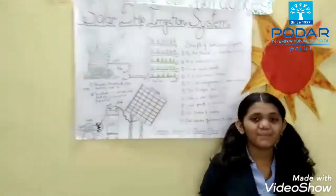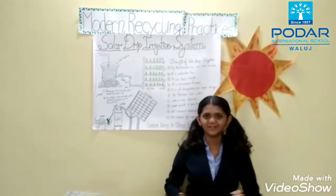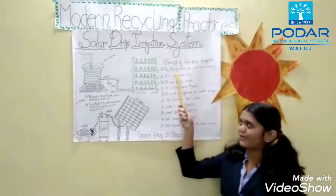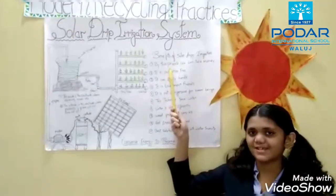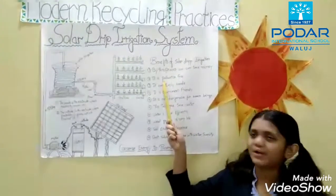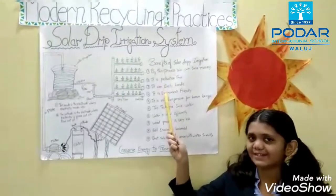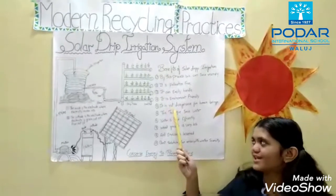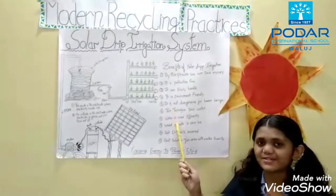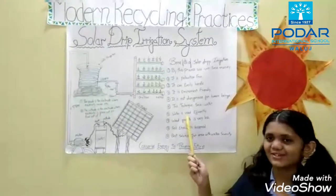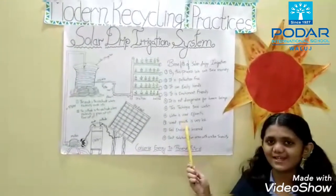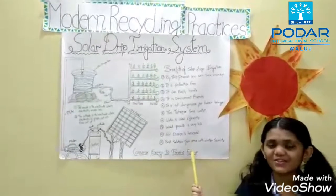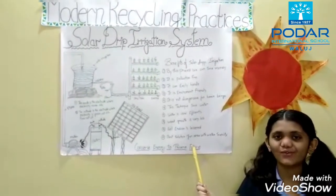There are many benefits of solar drip irrigation. By this process we can save water and we can save money. It is pollution free. It can be handled easily. It is environment friendly. It is not dangerous to human beings. In this process, the water is used efficiently. Weed growth is less. Soil erosion is also lessened. And it is the best solution for areas with water scarcity.